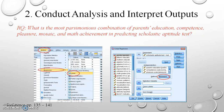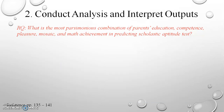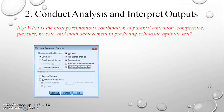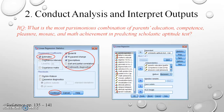We also want to generate specific statistics in our outputs, so we click on Statistics. The linear regression statistics dialog box opens. We make sure that Estimates, Model Fit, R Squared Change, Descriptives, and Collinearity Diagnostics are selected. Then we click Continue to proceed, return to the linear regression dialog box, and select OK to exit.